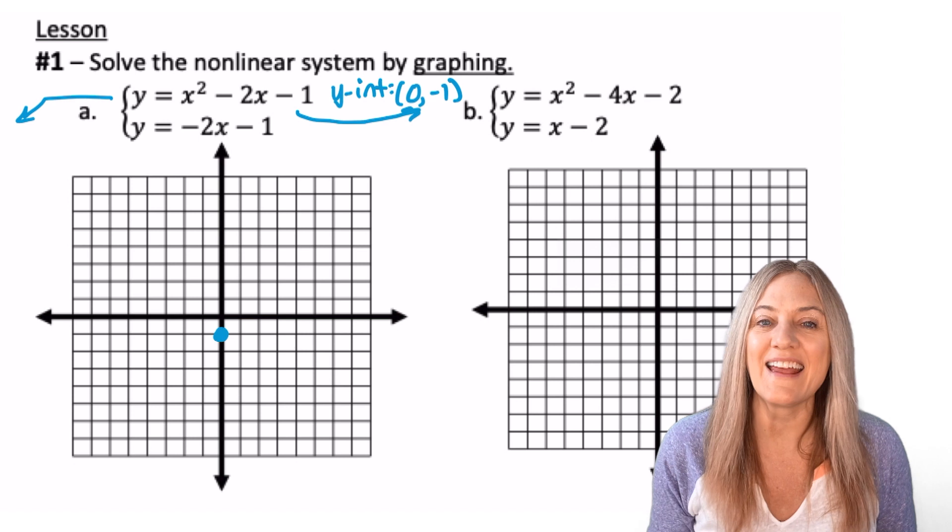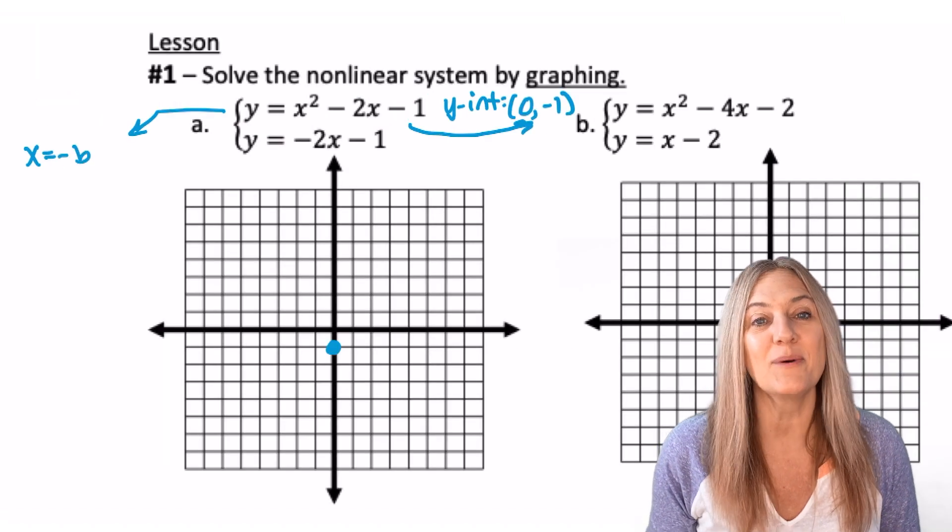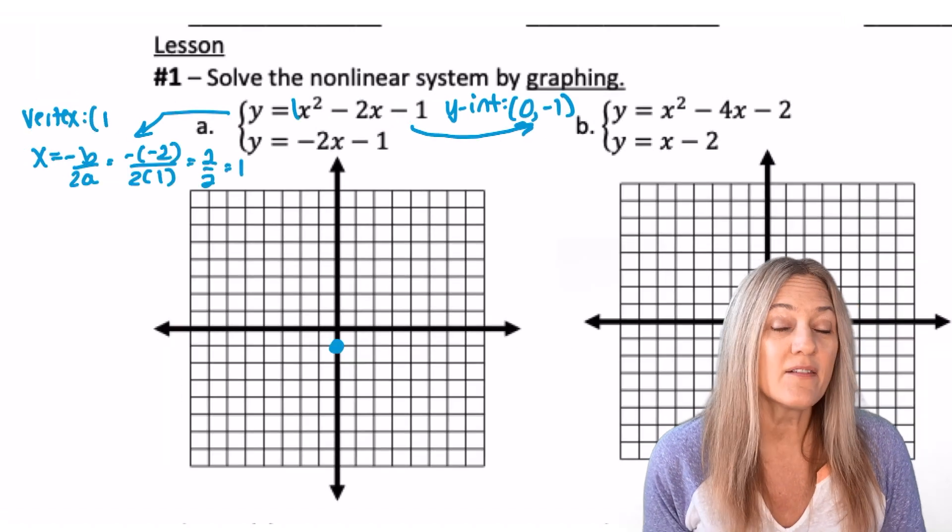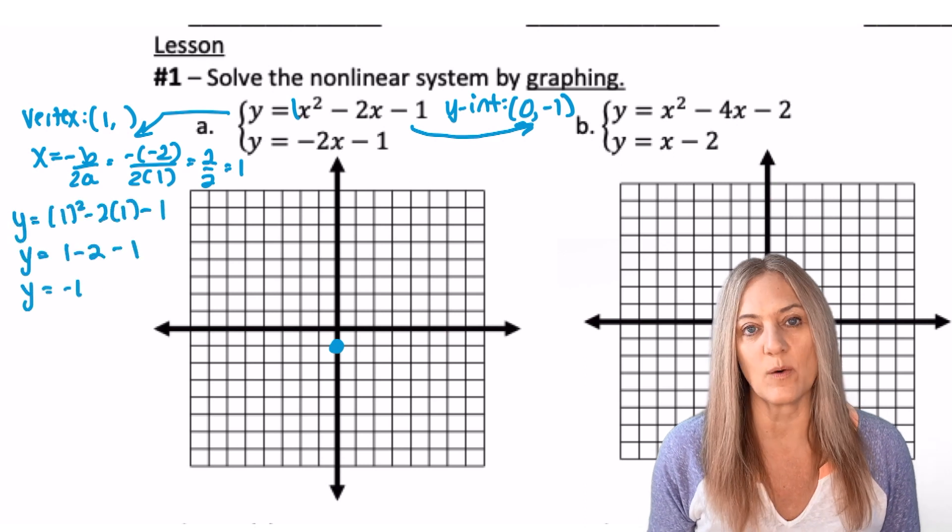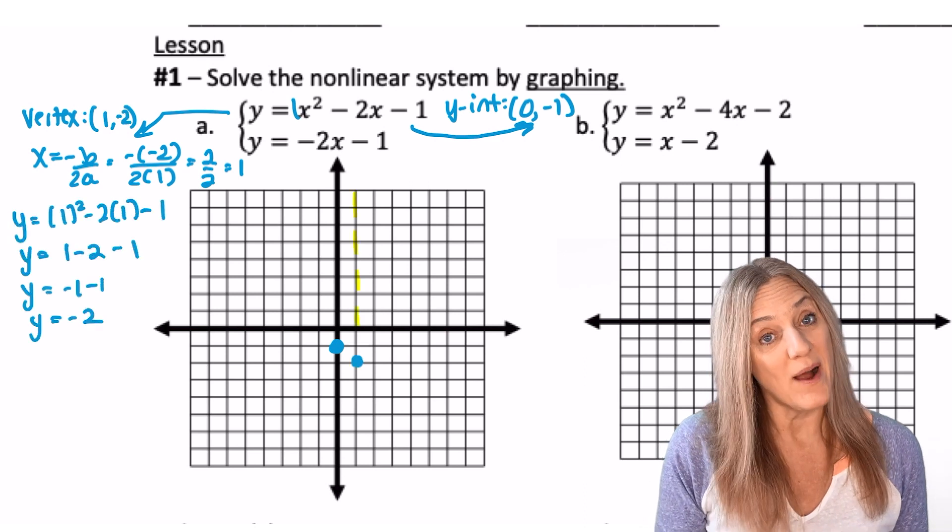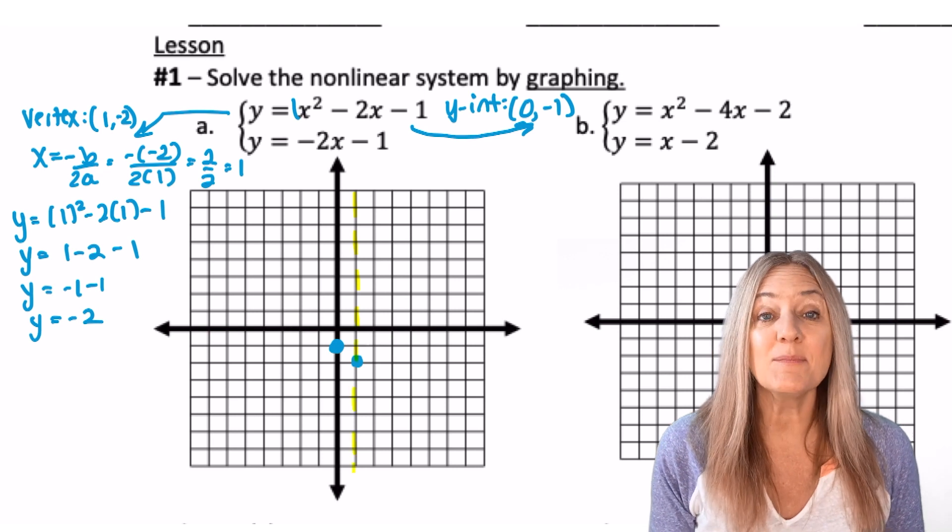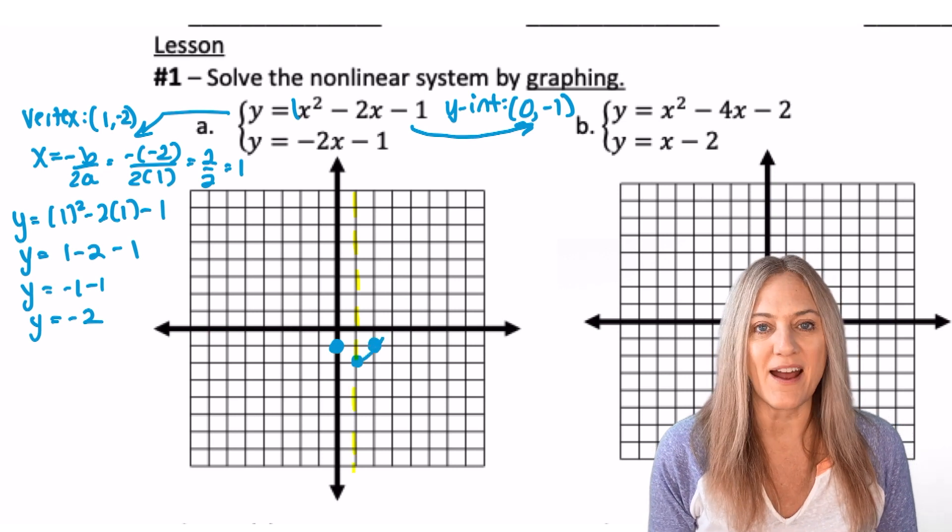So x equals negative b divided by 2a. We see that the x-coordinate of the vertex is 1. Now all I need to do is plug in and find the y-coordinate. Now that I have the y-intercept vertex, I can use symmetry to plot a third point and graph the quadratic.